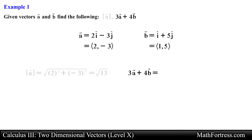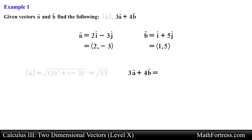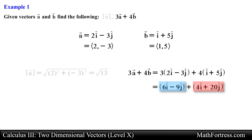Now let's find 3 times vector A plus 4 times vector B. We first carry out scalar multiplication for each vector, making sure we distribute the scalar for each unit vector. Then we collect like unit vectors, which simplifies to 10 I hat plus 11 J hat.